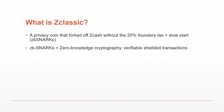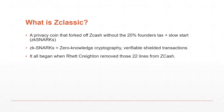It uses ZK-SNARKs, which is zero-knowledge cryptography, meaning the transaction, the sender, the recipient, and the amount are hidden. This all began when Red Creighton removed 22 lines from Zcash — he basically removed the tax and the slow start.